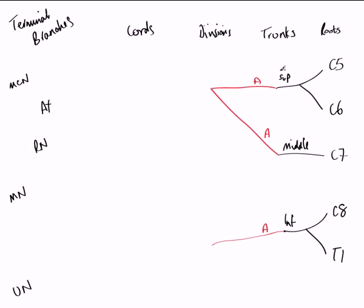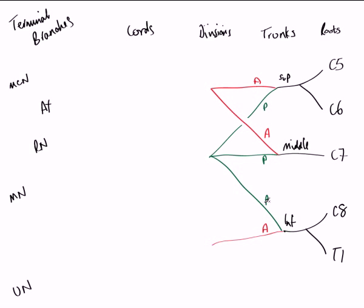Also coming away from the trunks alongside the anterior division is the posterior division. Coming away from the middle trunk, we have a posterior division — labelled P. This posterior division is met by the posterior division from the superior trunk, creating a characteristic X shape. The posterior division from the inferior trunk also travels distally to unite with the other posterior divisions, so all three posterior divisions unite at a single point. Meanwhile, the two anterior divisions from the superior and middle trunk converge, while the anterior division from the inferior trunk remains on its own.